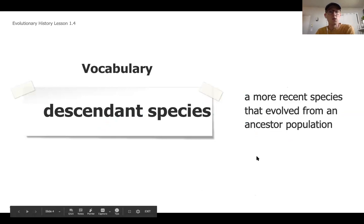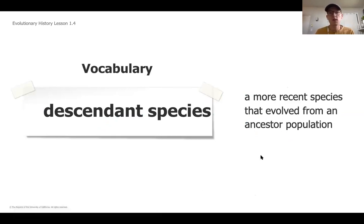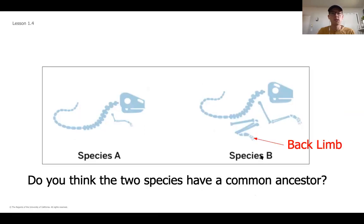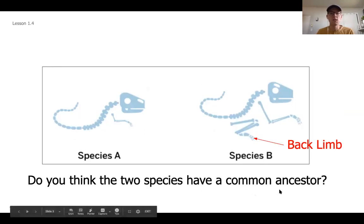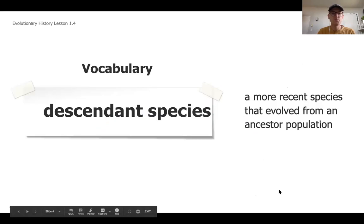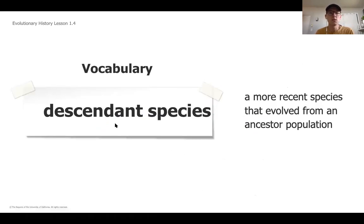Okay. So as we go into today's unit, there are going to be a couple things that are important in helping us determine whether or not species have a common ancestor. One of the vocabulary words that we're going to start to use is this term descendant species. A descendant species is a more recent species that evolved from an ancestor population.